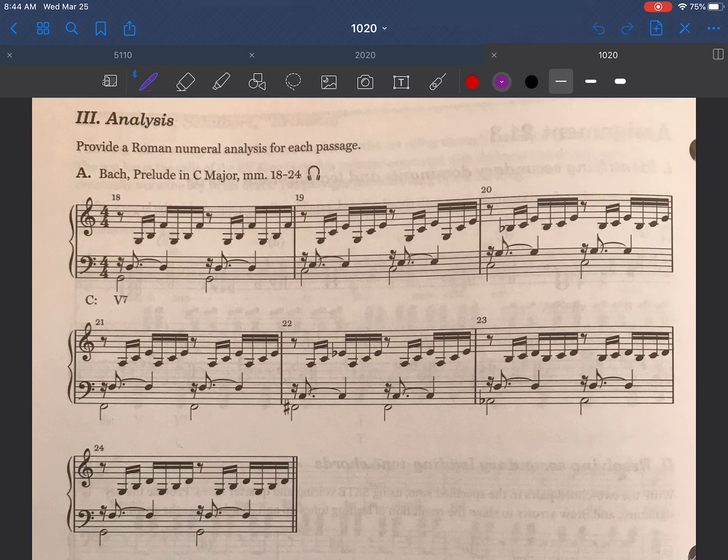So measure 18 begins with a V7 chord which is already written in for us here. In measure 19 I need to just take a collection of the pitches. I see that my texture is broken up into sort of these arpeggiated chords. So in the measure I see a C, I see an E, there's a G. And every other note that I see in this measure is either a C, an E, or a G. I'm in the key of C major. So this is a CEG chord. This is a I chord.